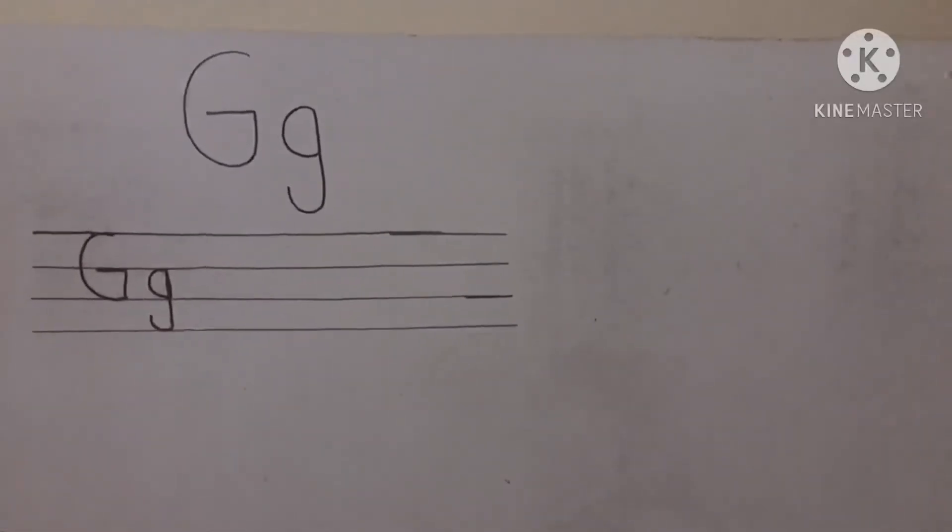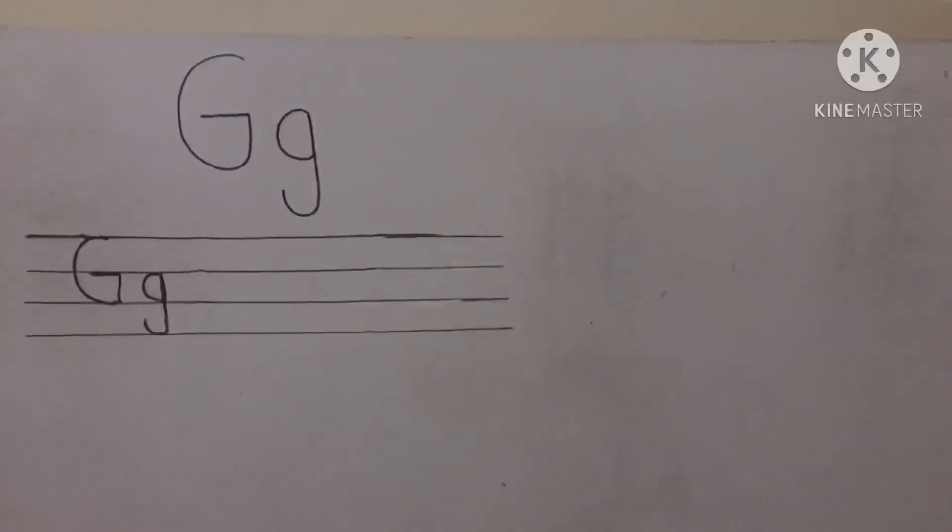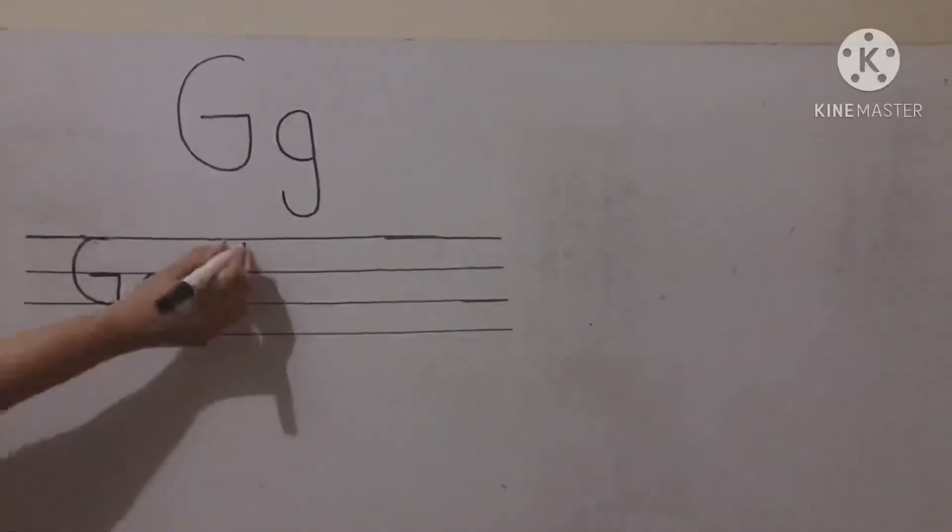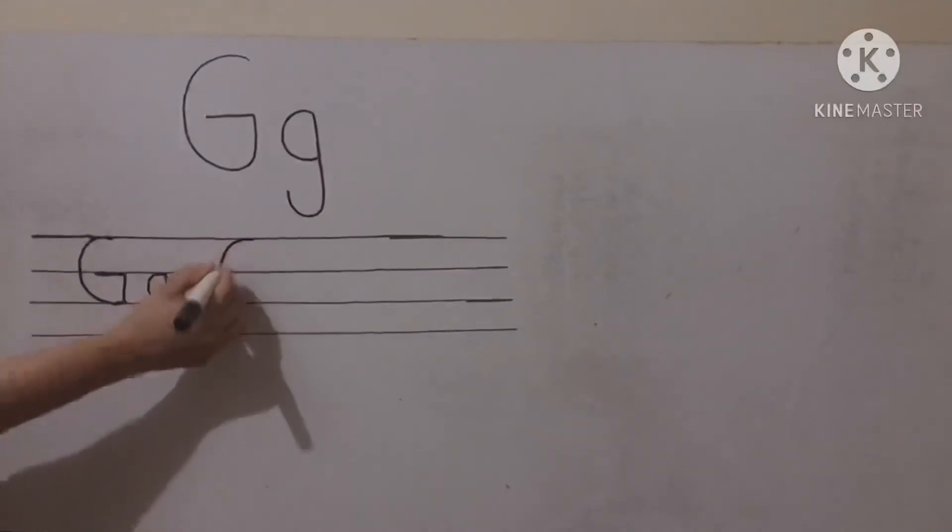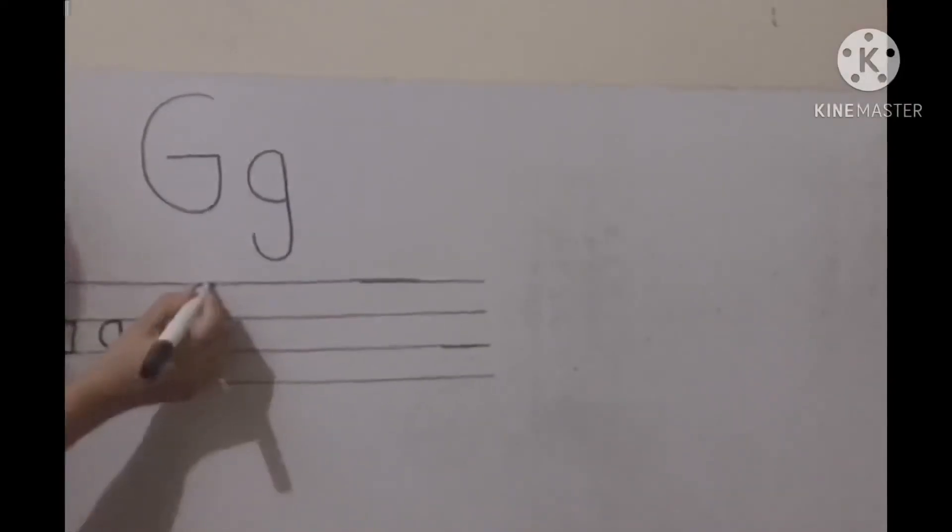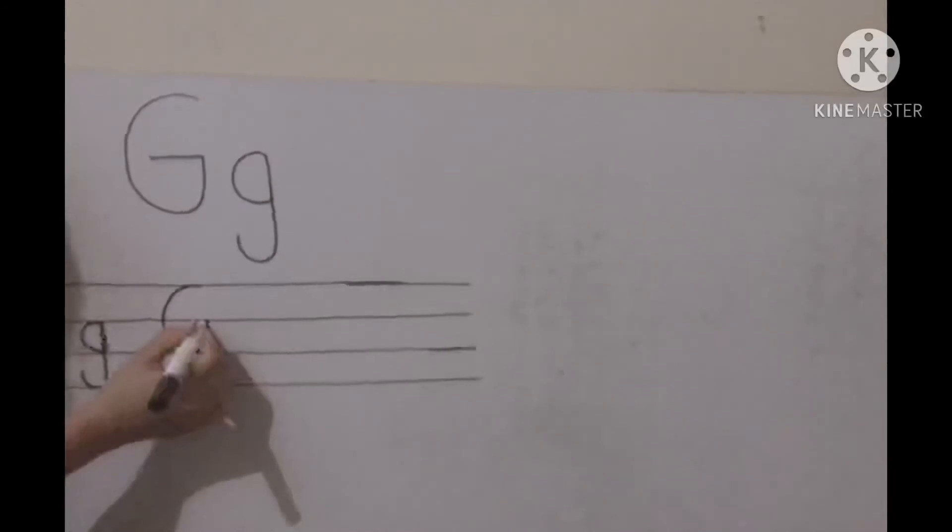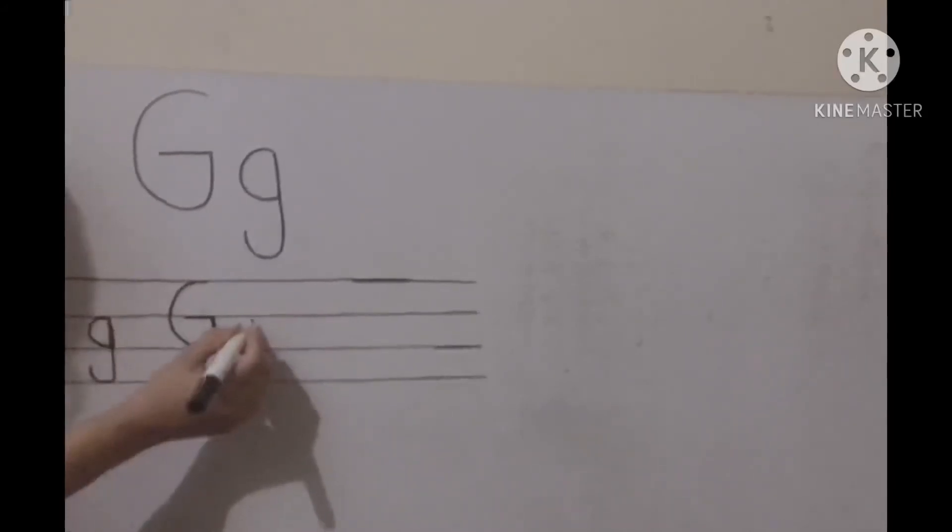So again I am writing one more time, so watch it carefully. So for the capital one we start from the top line and we will make a semicircle like this, up, and make like this sleeping line. Okay.